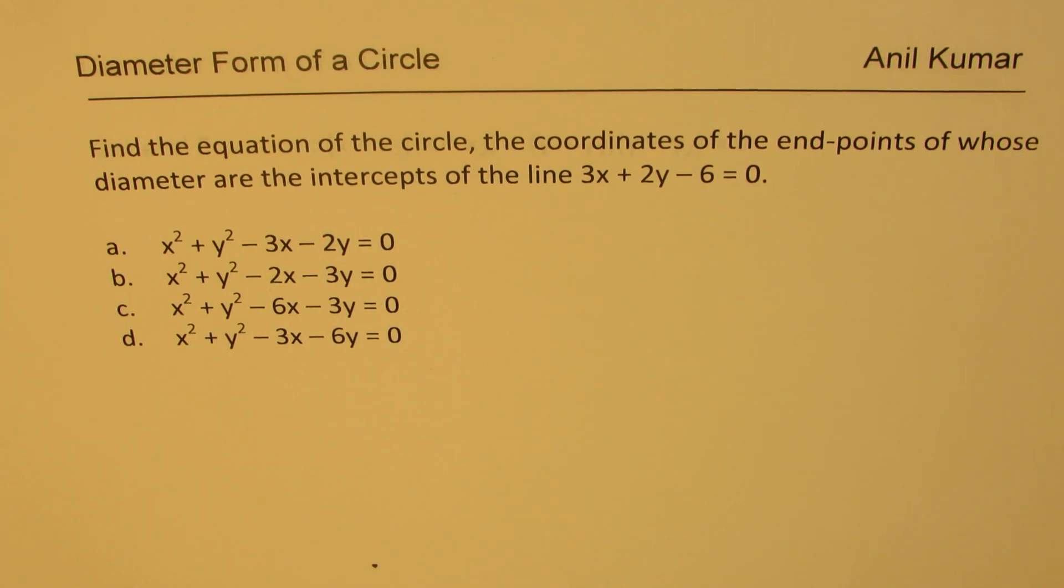The question here is find the equation of the circle, the coordinates of the endpoints of whose diameter are the intercepts of the line 3x plus 2y minus 6 equals 0. Four options are given to you. You can always pause the video, answer the question, and then look into my suggestions.